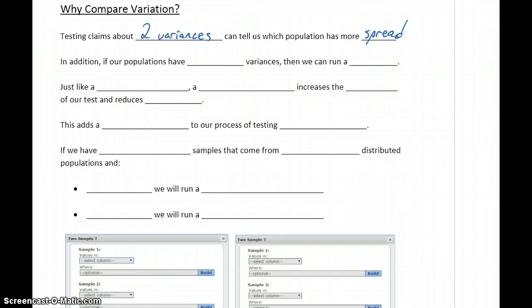That can have applications on its own, but in some cases, a more important application is that if our populations have equal variances, then we can run what's called a pooled t-test.